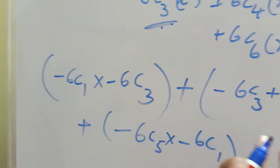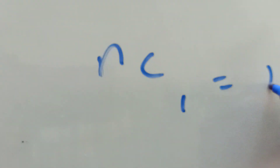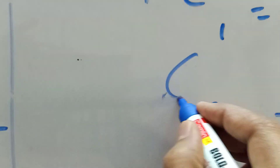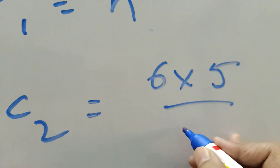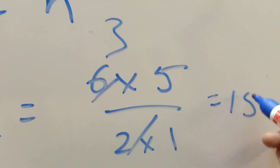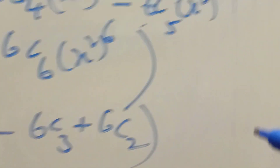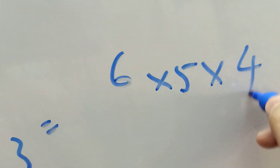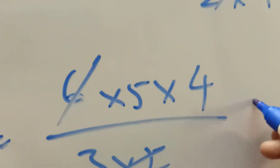Now let's calculate the values. 6C1 is 6. 6C2 is 6 into 5 by 2 into 1, which equals 15. 6C3 is 6 into 5 into 4 by 3 into 2 into 1, which equals 20. Using the formula nCr equals nC(n minus r), 6C5 equals 6C1, which is 6.